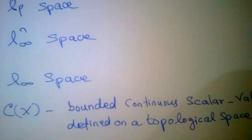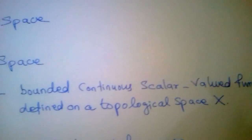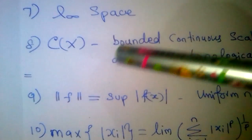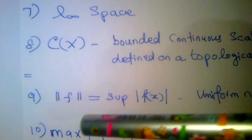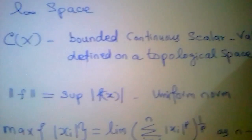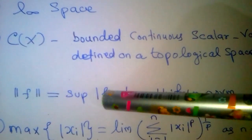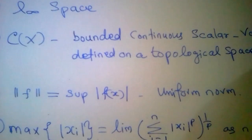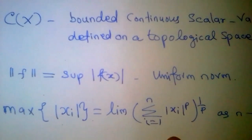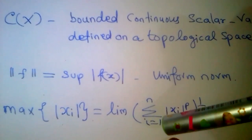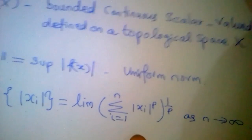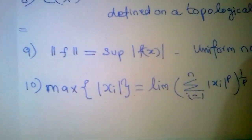Bounded continuous scalar-valued functions defined on the topological space X — let's look at the example of the norm. The supremum of mod f(x), the uniform norm, is the maximum of mod x_i. The summation where i varies from 1 to n of x_i to the power p, whole power 1 by p, as n tends to infinity.